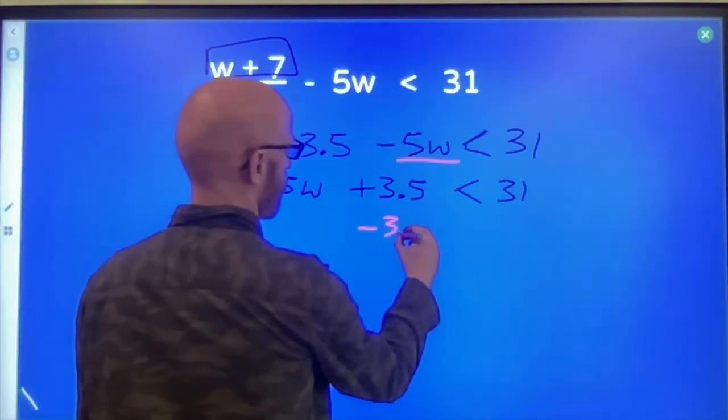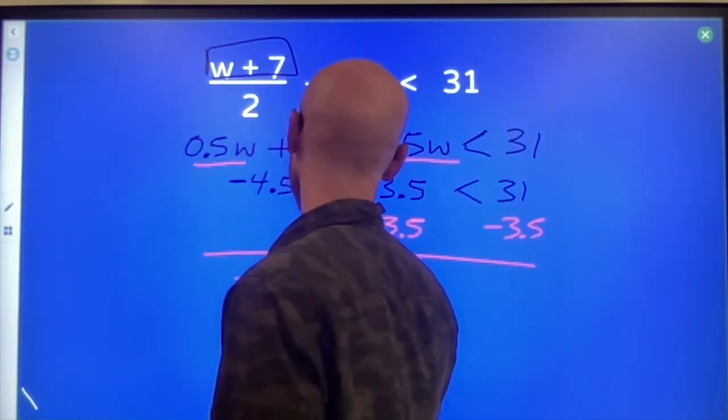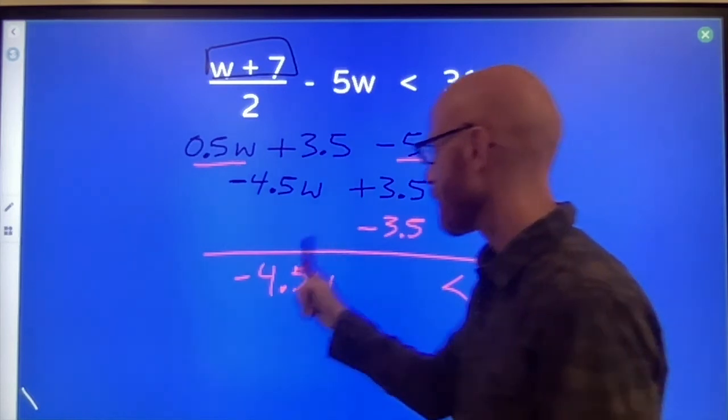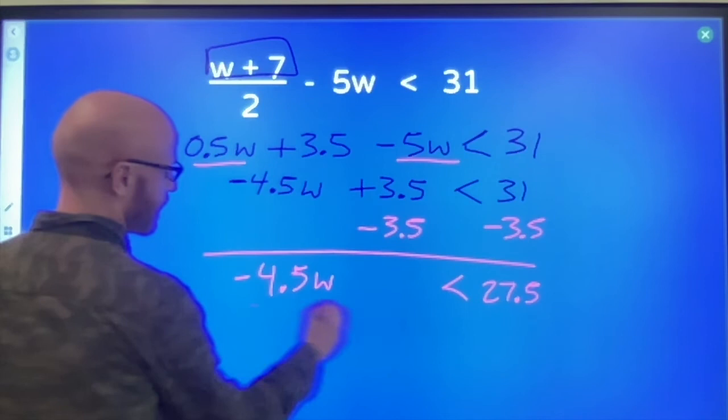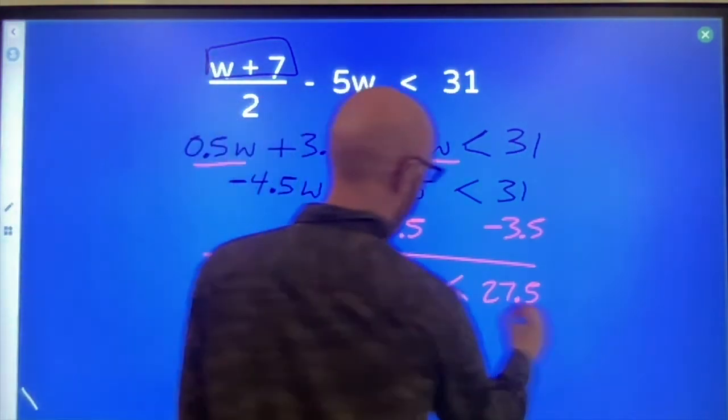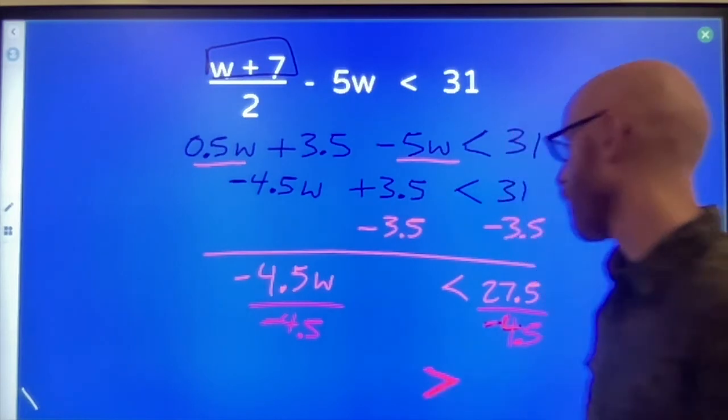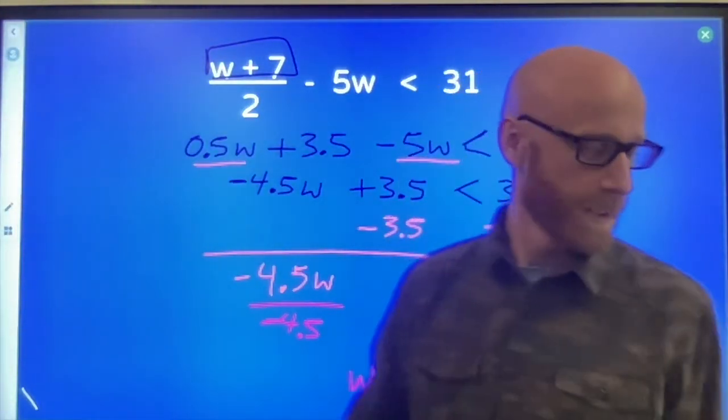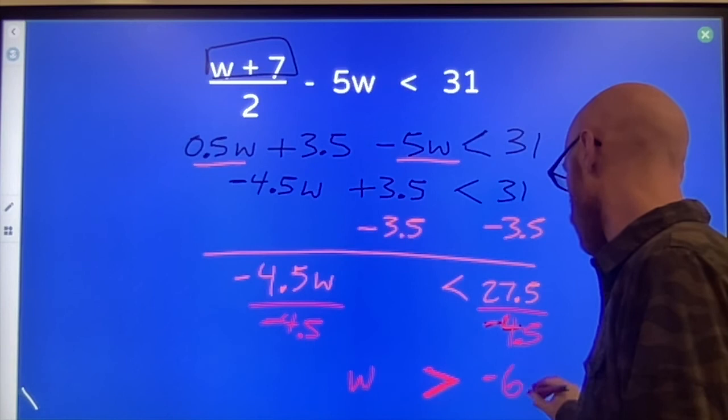Subtract 3.5 from both sides. Negative 4.5 W's is less than 27.5. Divide both sides by negative 4.5. You are going to need to remember that rule. If I ever divide both sides of an inequality by a negative value, then I'm going to need to reverse the direction because I'm flipping across a 0. W has to be bigger than whatever I get here. Negative 6.1 repeating.